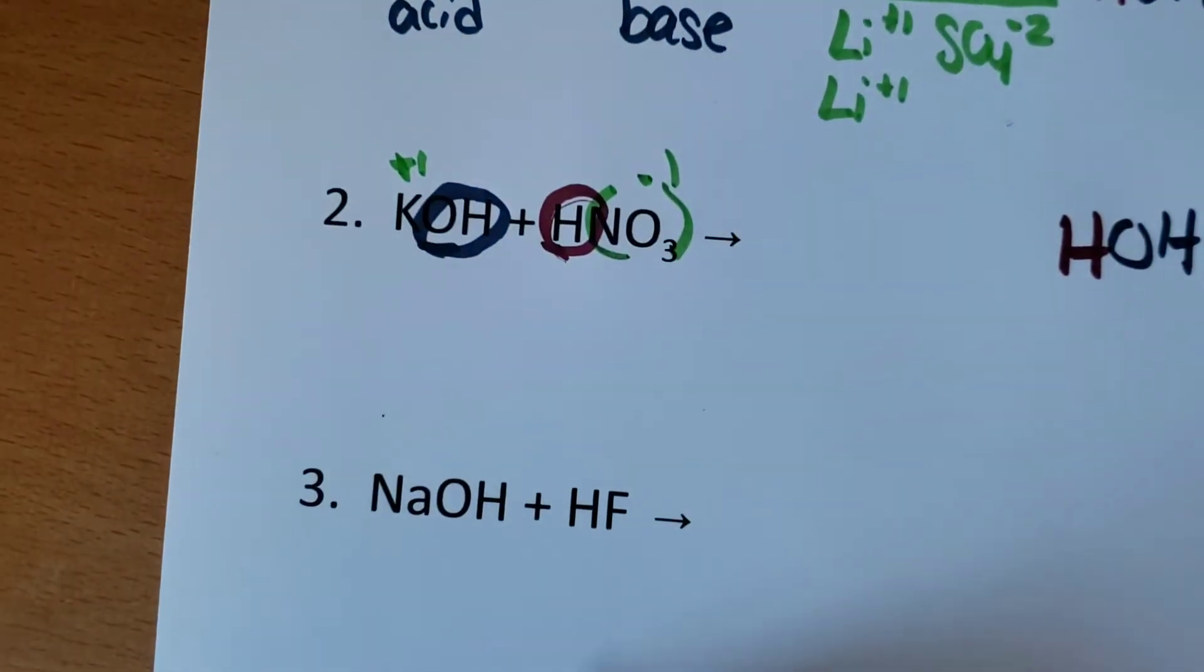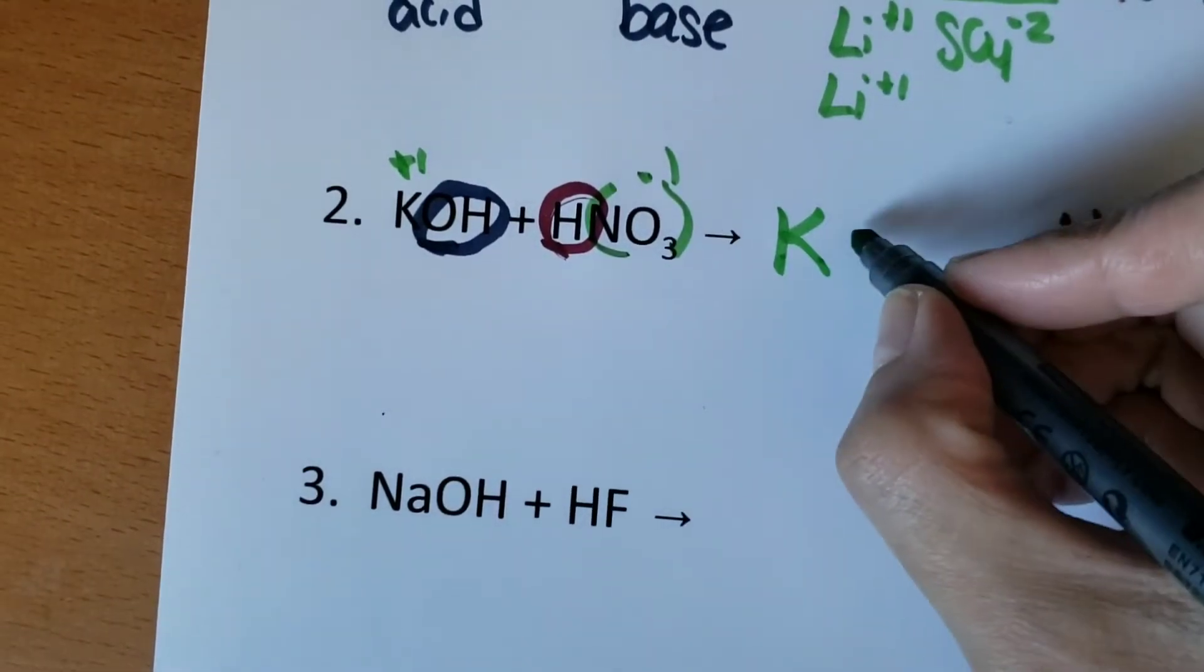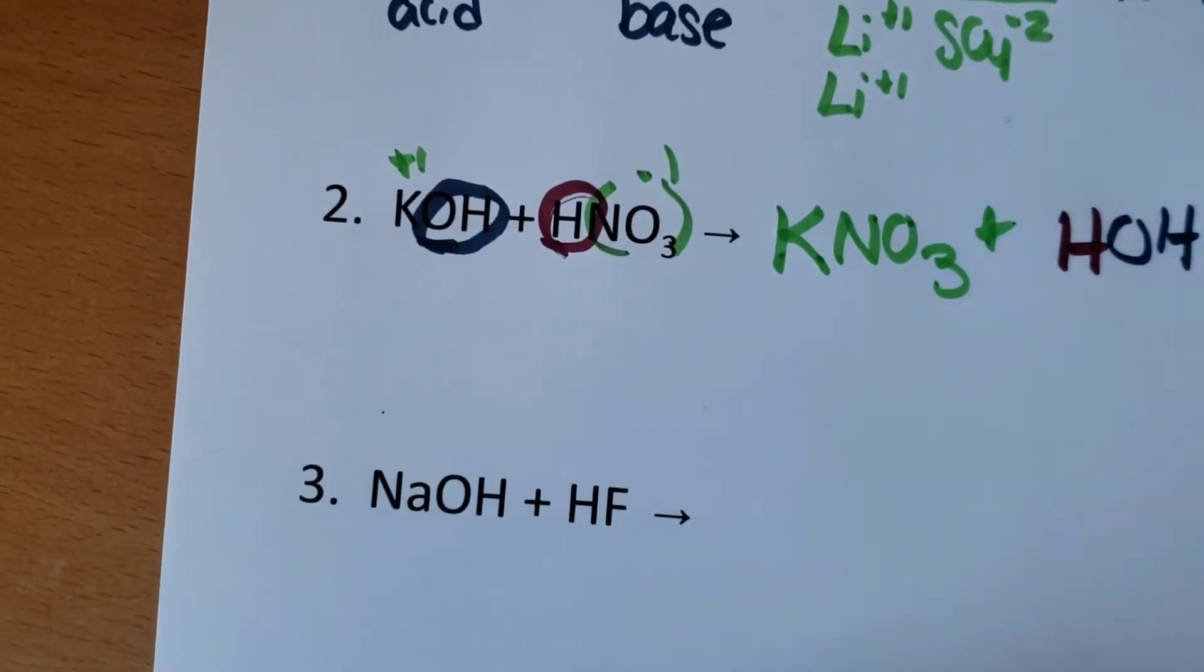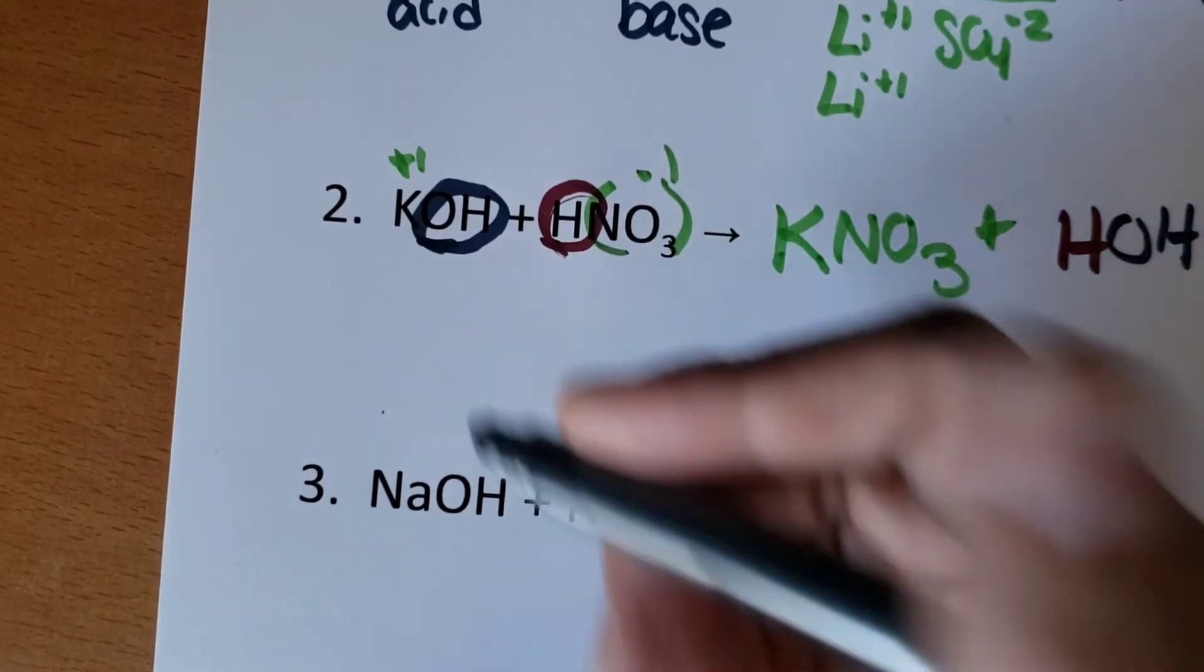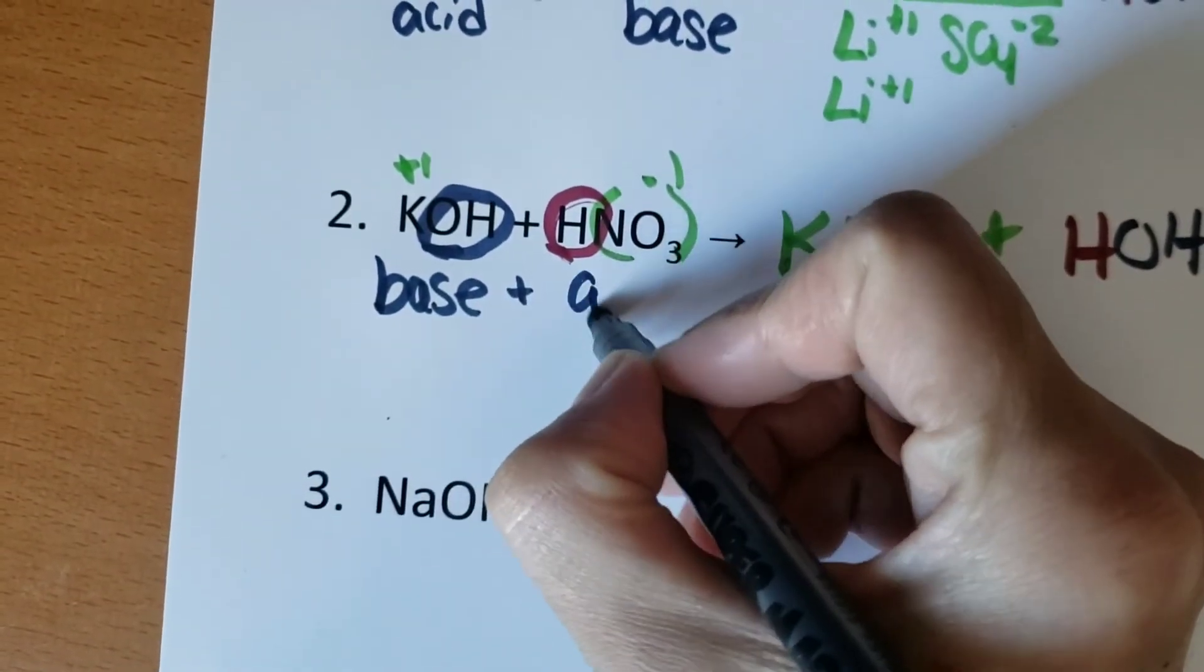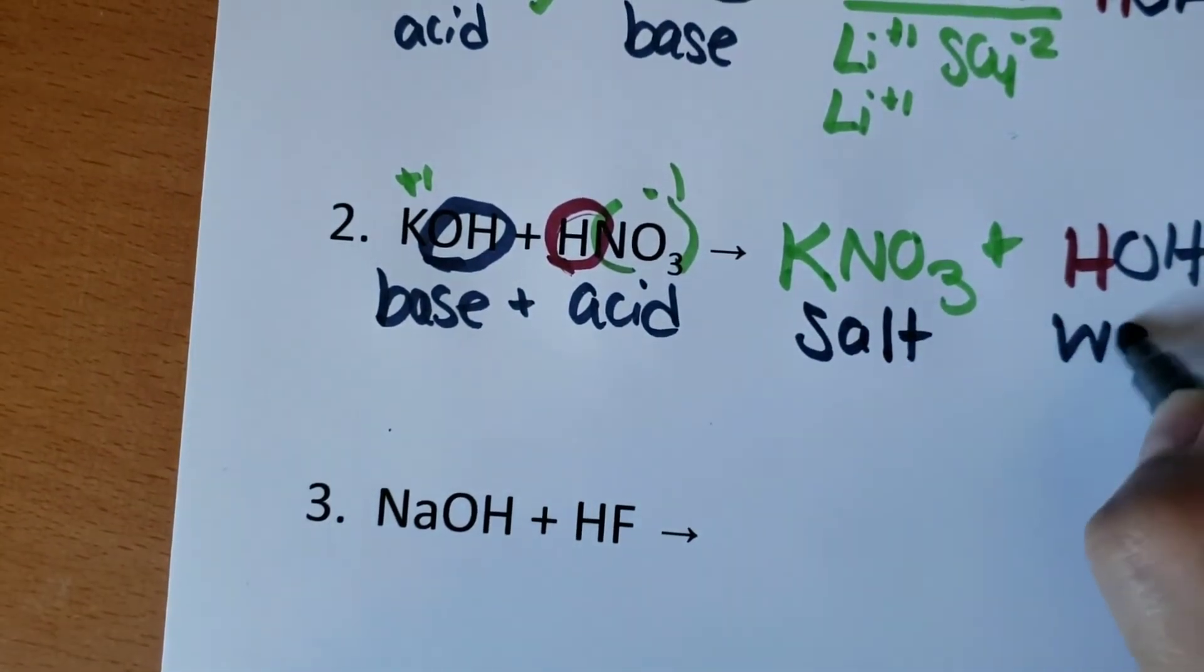Potassium has a charge of plus one. We'll put them together here. They have equal but opposite charges. So we'll just put them together. Write a plus sign. And here what we have, we have base and acid make salt and water.